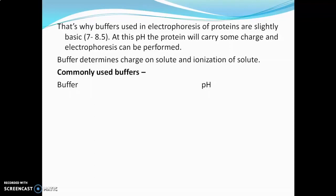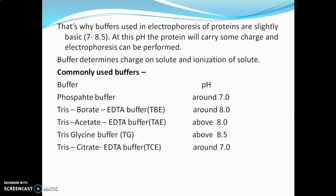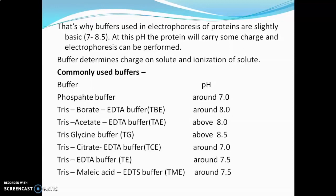Some common buffers used in electrophoresis are: phosphate buffer at around pH 7; Tris-borate-EDTA (TBE buffer) at pH 8; Tris-acetate-EDTA (TAE buffer) at pH 8; Tris-glycine buffer; Tris-citrate-EDTA buffer; Tris-EDTA buffer; and Tris-malic acid-EDTA buffer. These are the common buffers used in electrophoresis with their pH values.